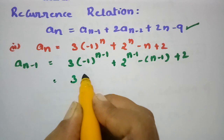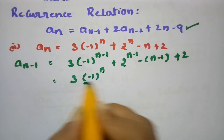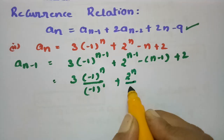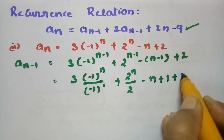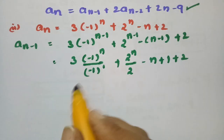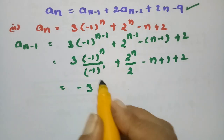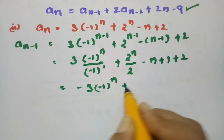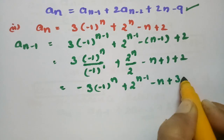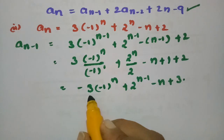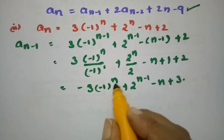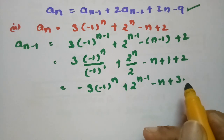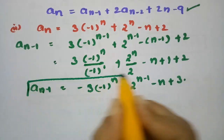Wherever we find n, we substitute n-1. So this becomes (-1)^n / (-1)^1, times 2^n / 2, and -(n-1) + 2 = -n + 3. This can be written as -3·(-1)^n times 2^(n-1), giving us An-1 = -3·(-1)^n · 2^(n-1) - n + 3.